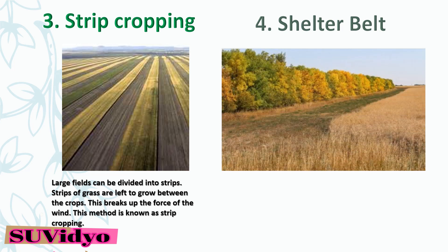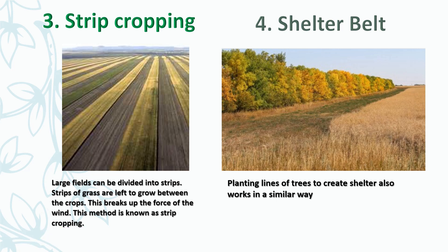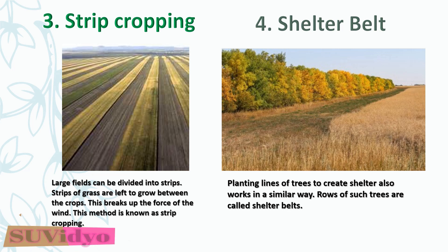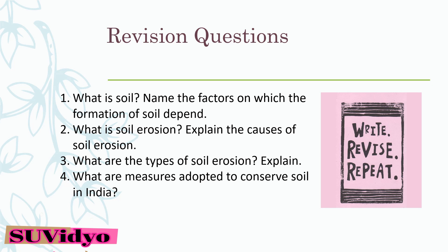The fourth method is shelter belts — planting lines of trees to create shelter works in a similar way. Rows of such trees are called shelter belts, grown on the boundary of crops. Pause the video and solve the following questions. If you are not able to solve the question, then revise and try again.